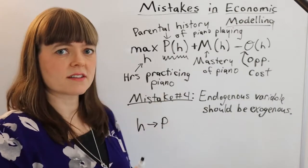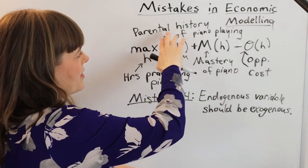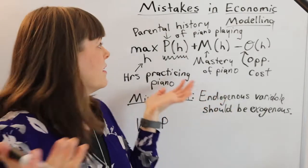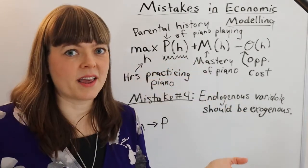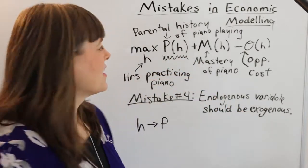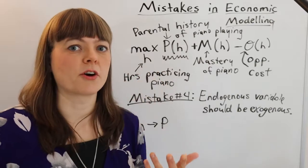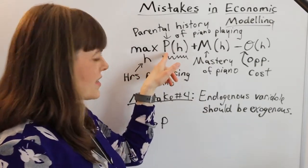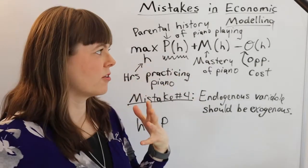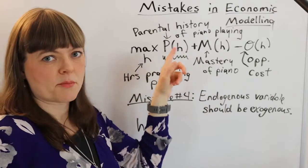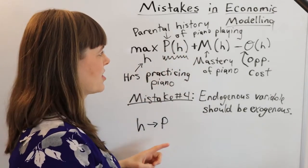This happens a lot when, for example, a student has read an article that's showing parental history of piano playing is highly correlated with the kid playing more piano. So you want this variable in the model, but this is not an appropriate way to put it in the model. It needs to be exogenous.